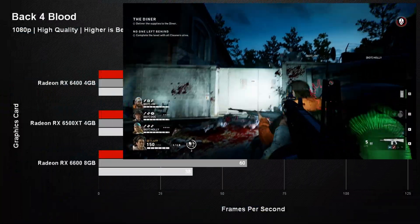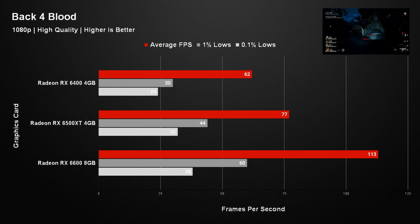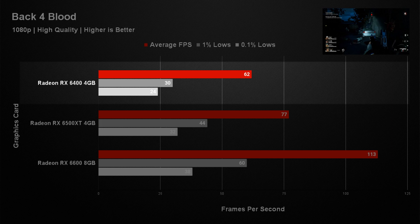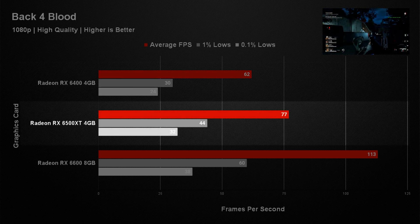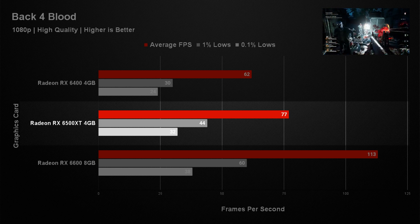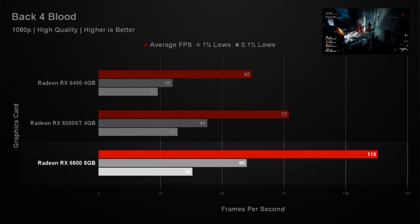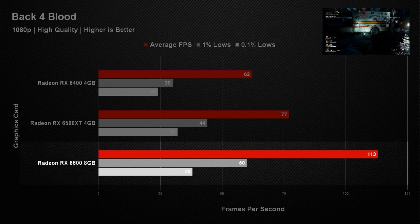First up we have Back 4 Blood, where all three graphics cards managed to maintain an average of over 60 frames per second with consistent 1% lows. The RX 6400 got an average of 62 fps, the RX 6500 XT pulled away slightly at 77 fps, and the RX 6600 really came through with its 8GB of VRAM, hitting an average of 113 fps and placing itself in a completely different tier.